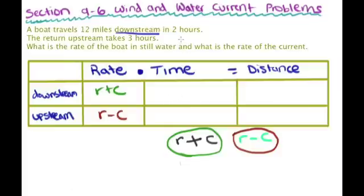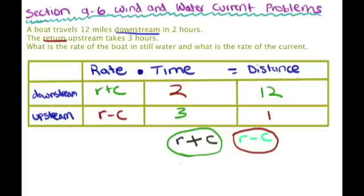We have a time here. It says the boat traveled downstream in two hours, so we put two. And it took three hours to go upstream. The distance is going to be 12 miles, because it says we traveled 12 miles downstream, and the return upstream means we're coming back the same distance — so 12 miles again. Now if we read across, we have two equations.